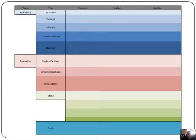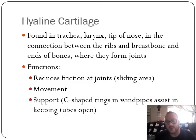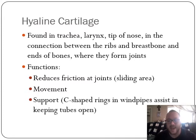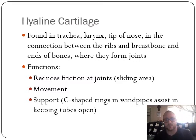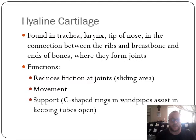Let's look at hyaline cartilage. The structure is a pearlish-blue color with fine collagen fibers interspersed in the matrix - not many collagen fibers. It's found in the trachea, the larynx, the tip of your nose, in the connection between the ribs and the breastbone (sternum), and at the ends of bones where they form joints. We'll be drawing a joint which you need to be able to redraw for any exam.